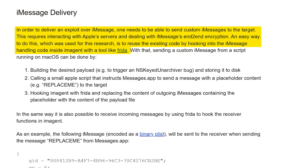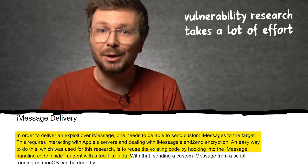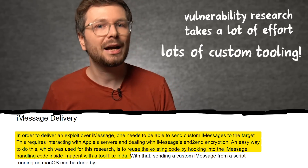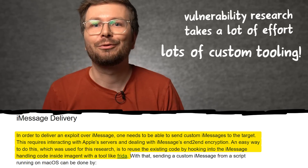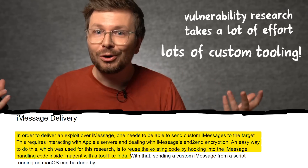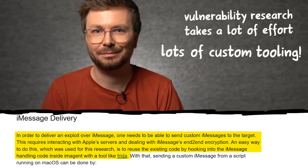In order to deliver an exploit over iMessage, one needs to be able to send custom iMessages to the target. This requires interacting with Apple's servers and dealing with iMessage's end-to-end encryption. An easy way to do this, which was used for this research, is to use existing code by hooking into the iMessage handling code inside im_agent with a tool like Frida. This kind of research takes a huge amount of effort, not only creatively but also on an engineering level — you need to develop custom tooling just to start looking for vulnerabilities.